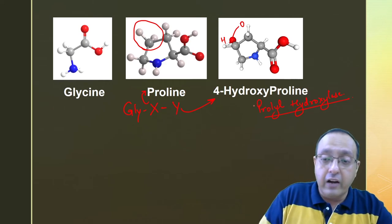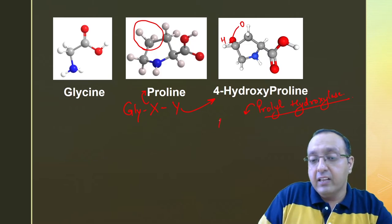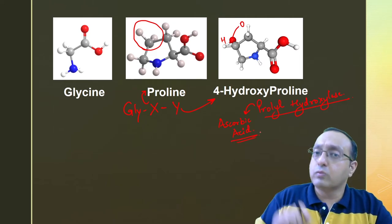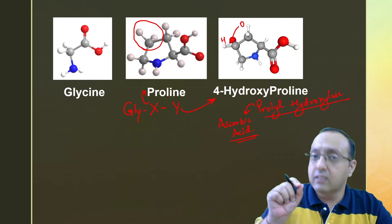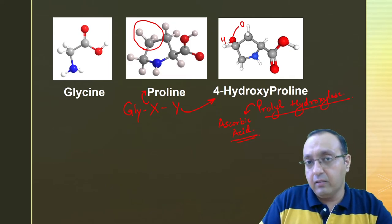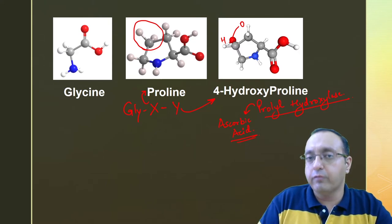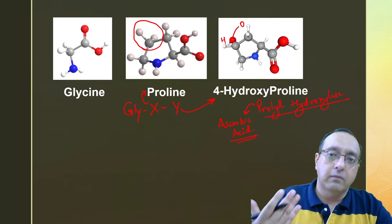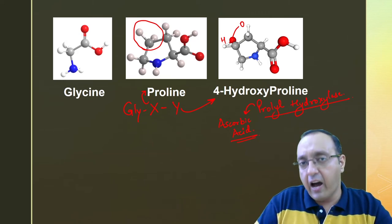Interestingly, prolyl hydroxylase requires ascorbic acid for its activity. Because one of the active sites contains an iron atom and that needs to be in the ferrous state, not in the ferric state for its optimal activity. And ascorbic acid is important for regenerating that oxidized form of iron.